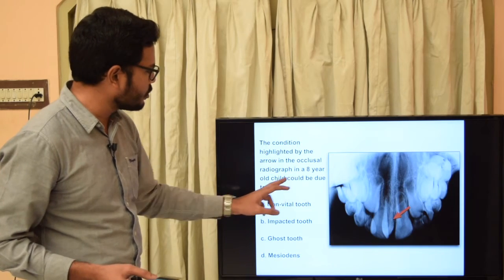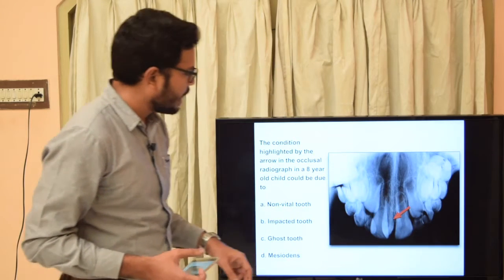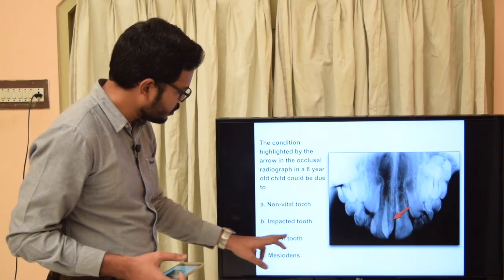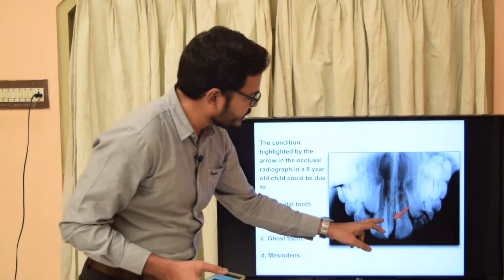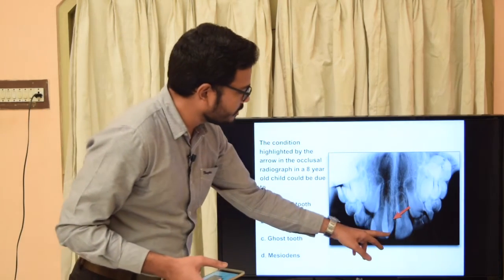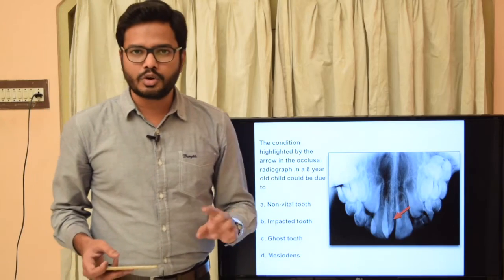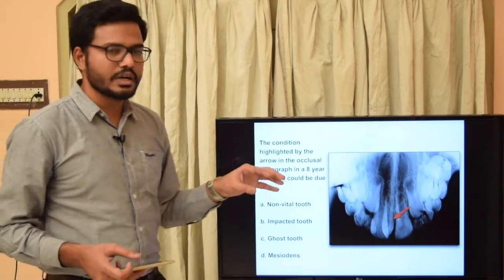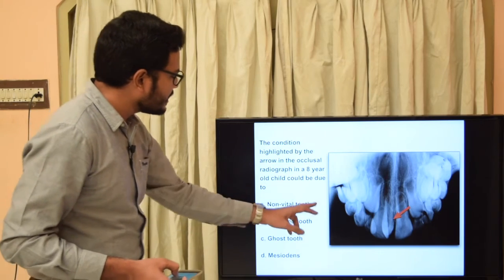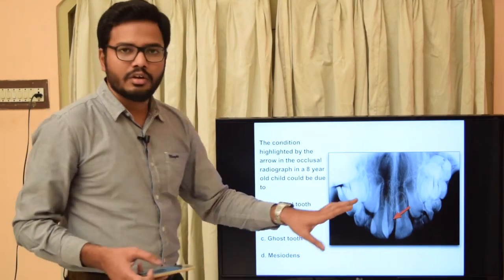Now let's see another question: the condition highlighted by the arrow in the occlusal radiograph in an eight-year-old child could be which of the following — non-vital tooth, impacted tooth, ghost tooth, or mesiodense? The arrow points to a peculiar structure present between the maxillary central incisors in the midline, with a shorter crown and very short root. These are radiographic features of a supernumerary tooth called mesiodense, which is usually present in the midline between the maxillary central incisors. Non-vital teeth cannot be diagnosed radiographically unless there are periapical changes.